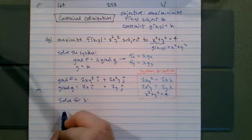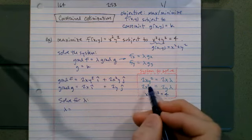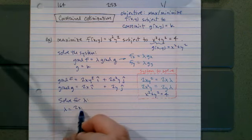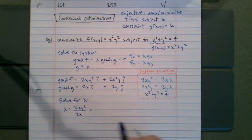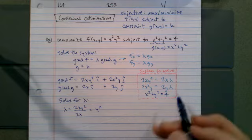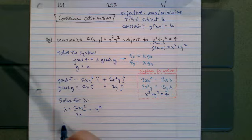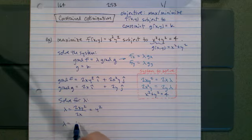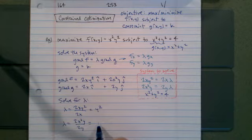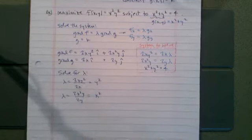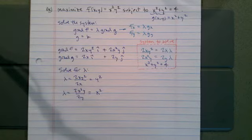So this first equation will tell us that lambda is equal to 2xy squared over 2x, so lambda is just going to give us y squared. And then in the second equation we find out that lambda is equal to 2x squared y over 2y. So the 2y cancels and we're left with x squared. Since lambda has to equal itself, we find out that x squared is equal to y squared.